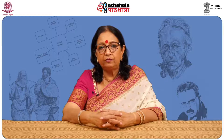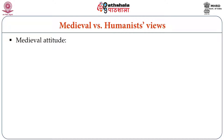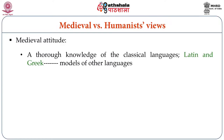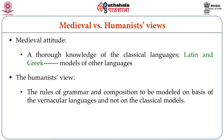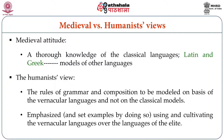The Medieval versus the Humanists' Views: The medieval attitude was that it was essential to acquire a knowledge of the classical languages, that is Latin and Greek, and they believed these should serve as the models for other languages. The Humanists believed that grammar and composition should be modeled on the basis of the vernacular languages, because these languages were not exactly similar to the classical models. The Humanists believed in cultivating the vernacular languages over the languages of the elite.